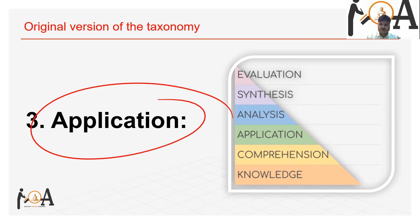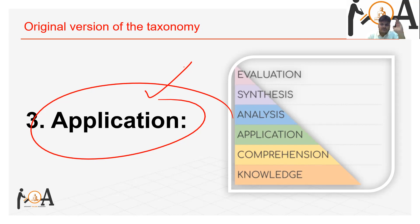The third level is Application. Application involves the use of acquired knowledge — using prior knowledge to solve problems in new situations. For example: would an apple prevent scurvy, a disease caused by deficiency of vitamin C? If an apple provides sufficient vitamin C, then it would prevent scurvy. This is like supervised and unsupervised learning in artificial intelligence, where machines generate results in new situations based on previous data patterns.